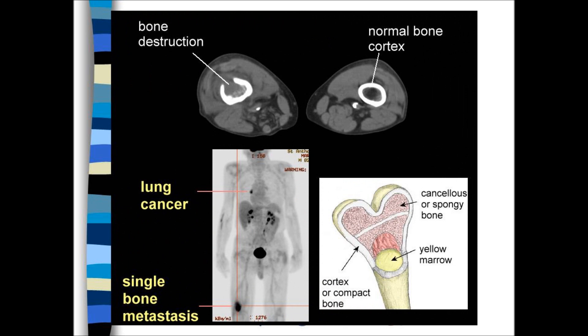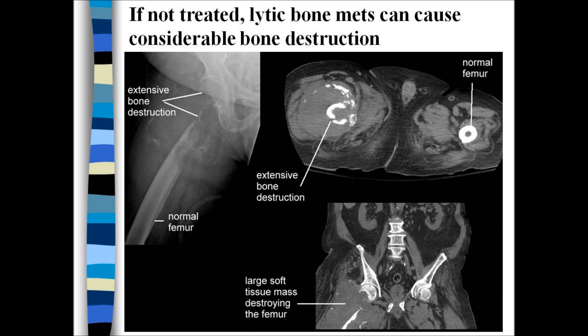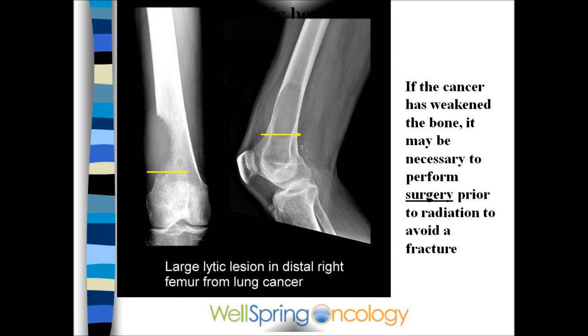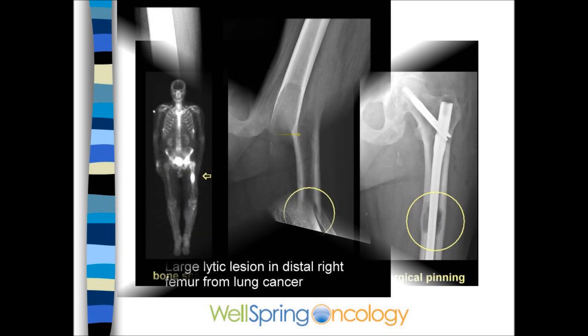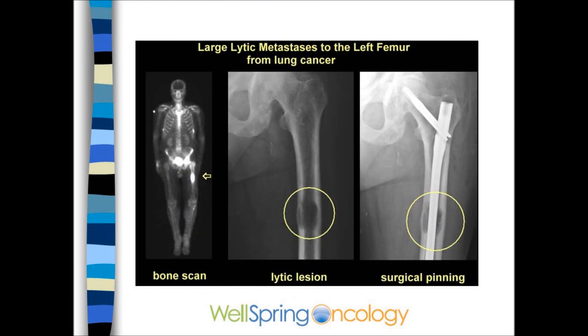The lytic lesions are more worrisome. They have created holes in the cortex of the bone, and there's a higher risk of invasion into the tissue around the bone or a fracture. If there's a large lesion or hole in the bone, such as the femur, the patient should have surgery prior to radiation. In this case, a hole in the femur was pinned prior to radiation, avoiding a fracture.